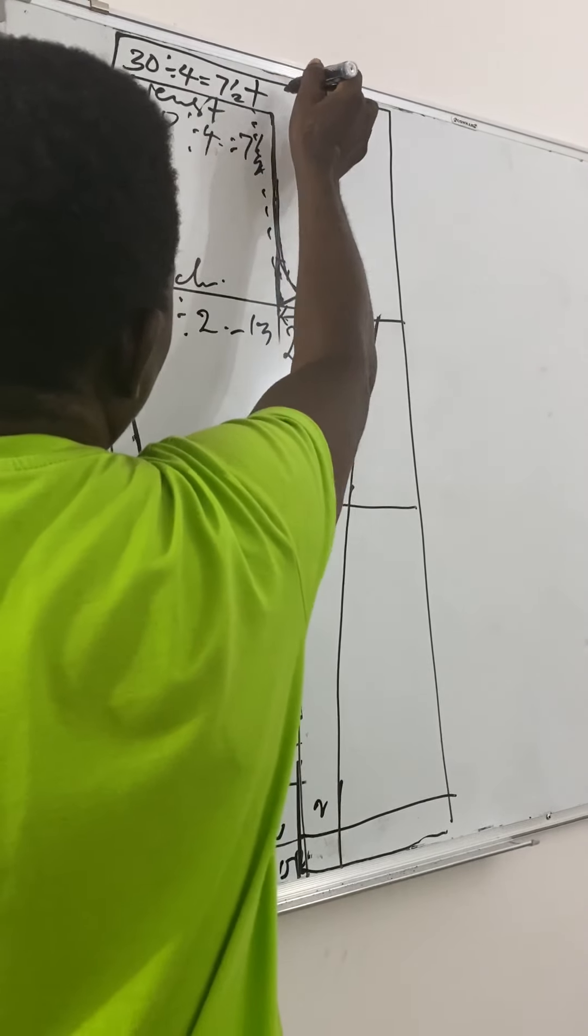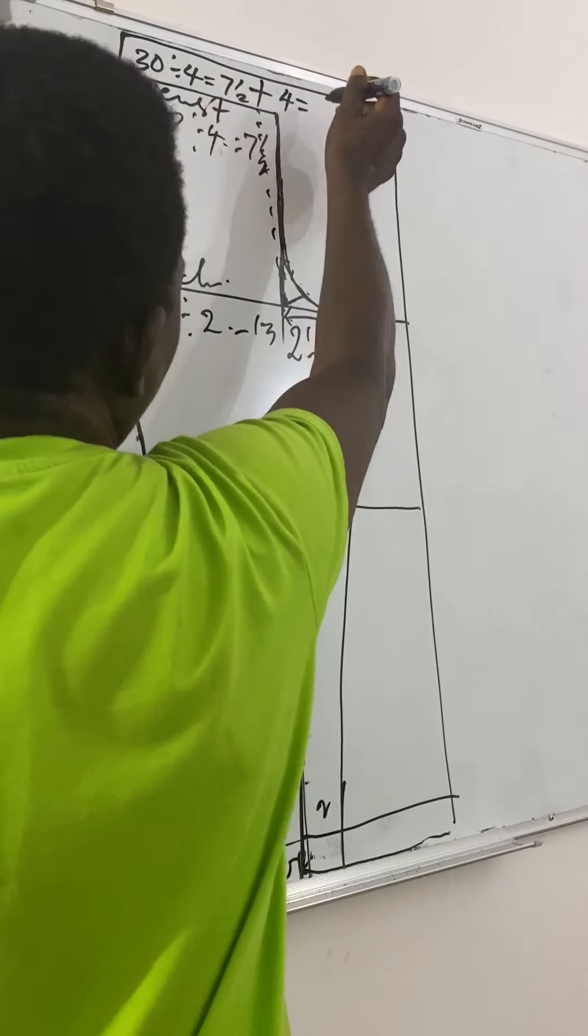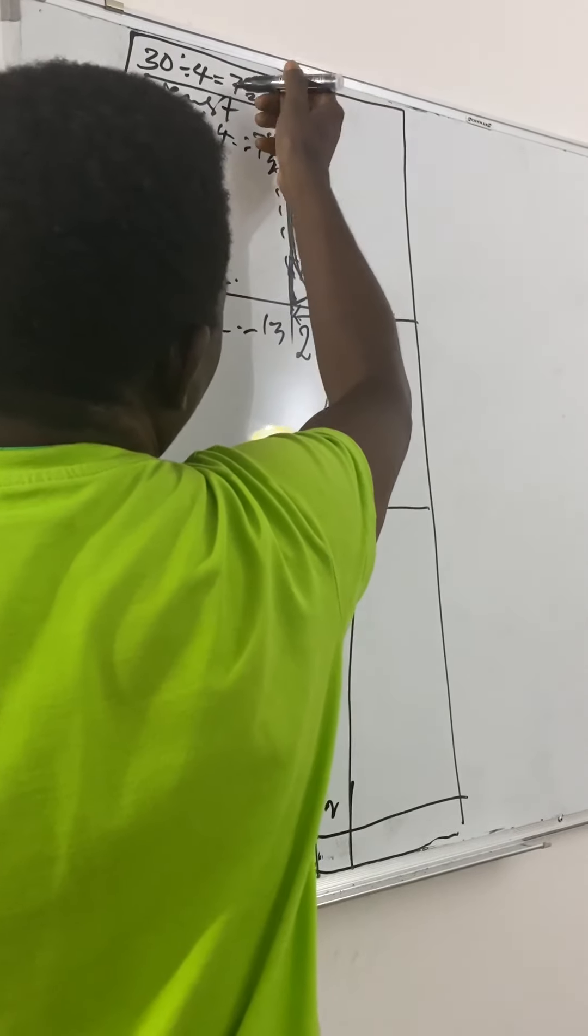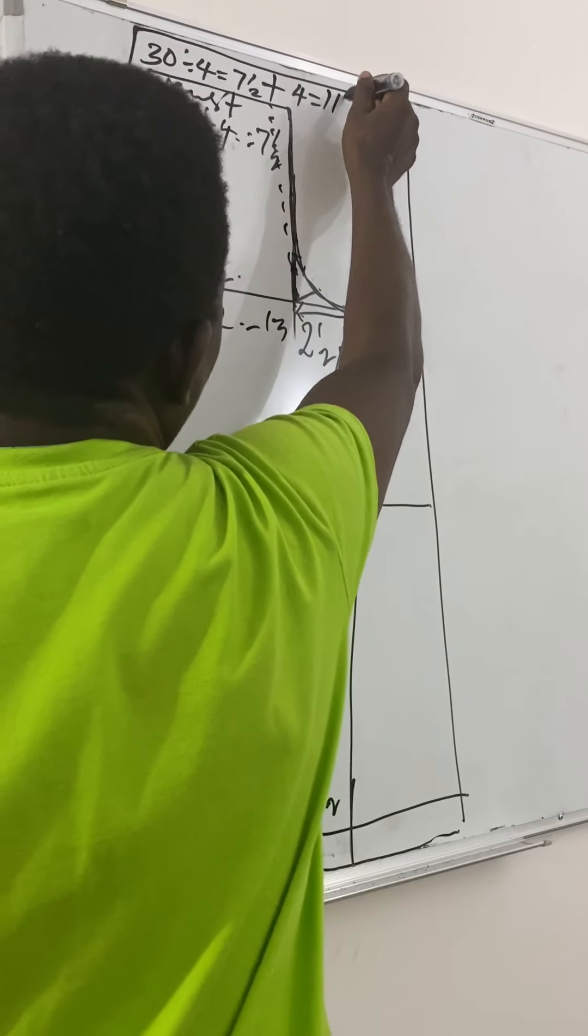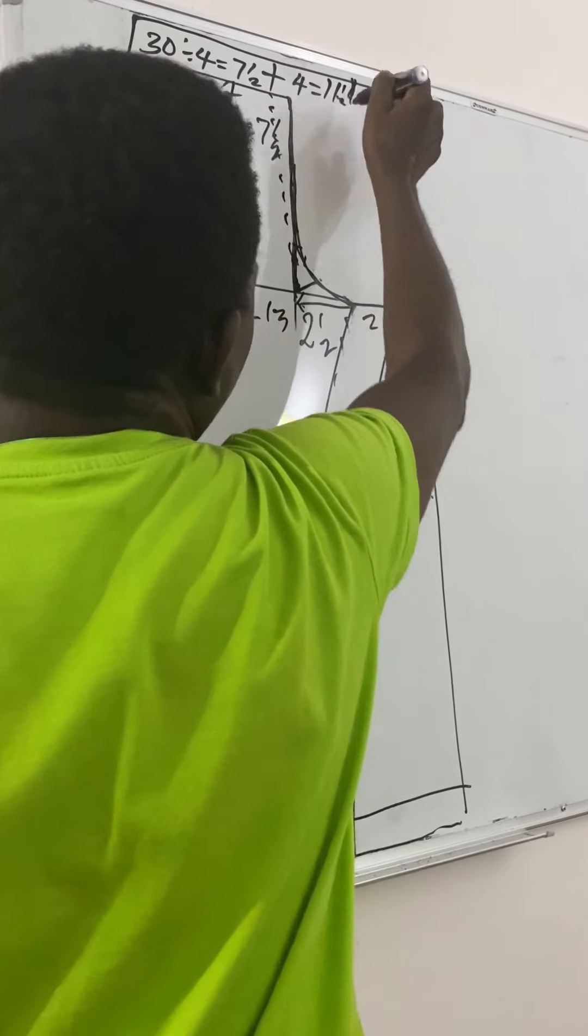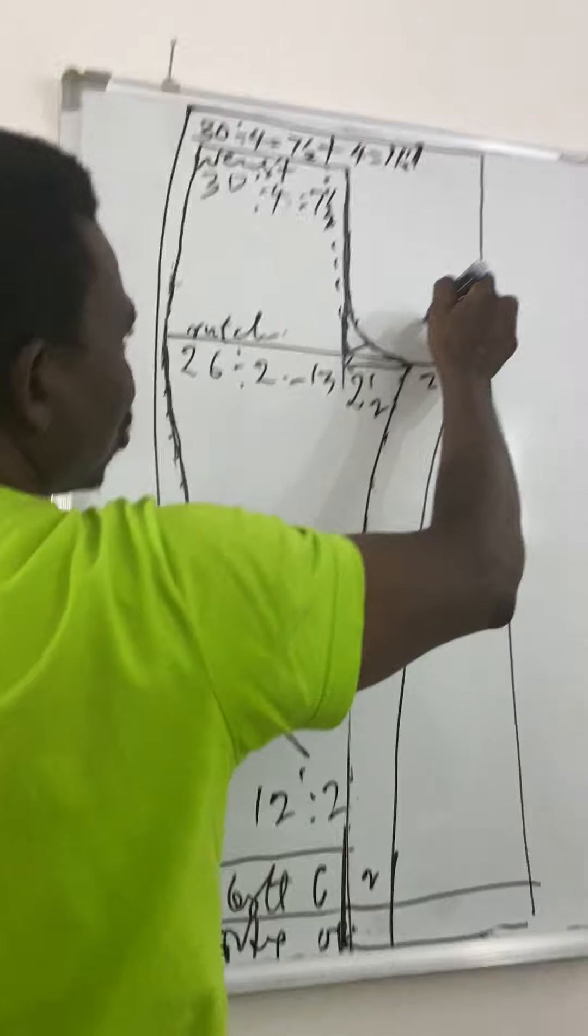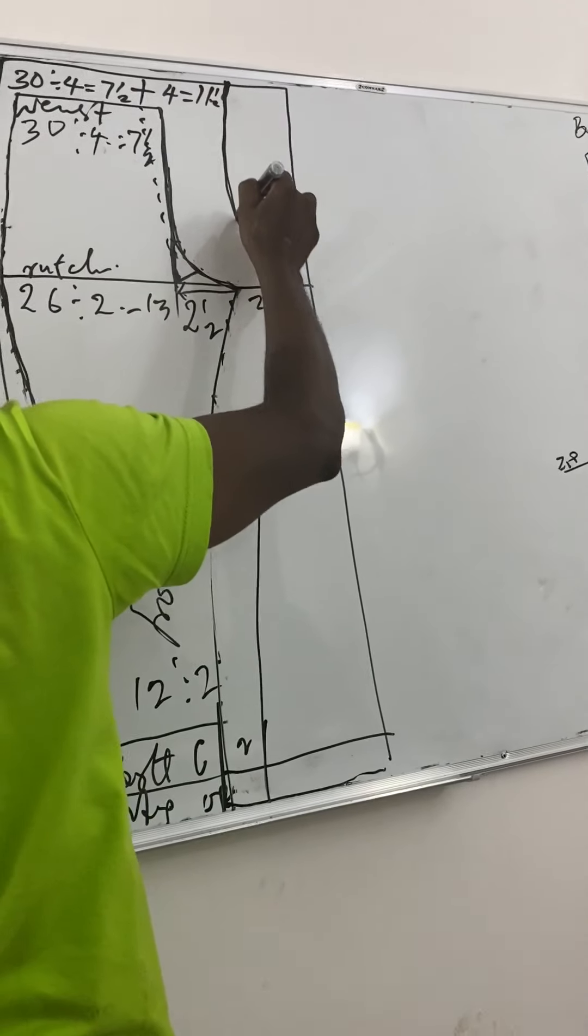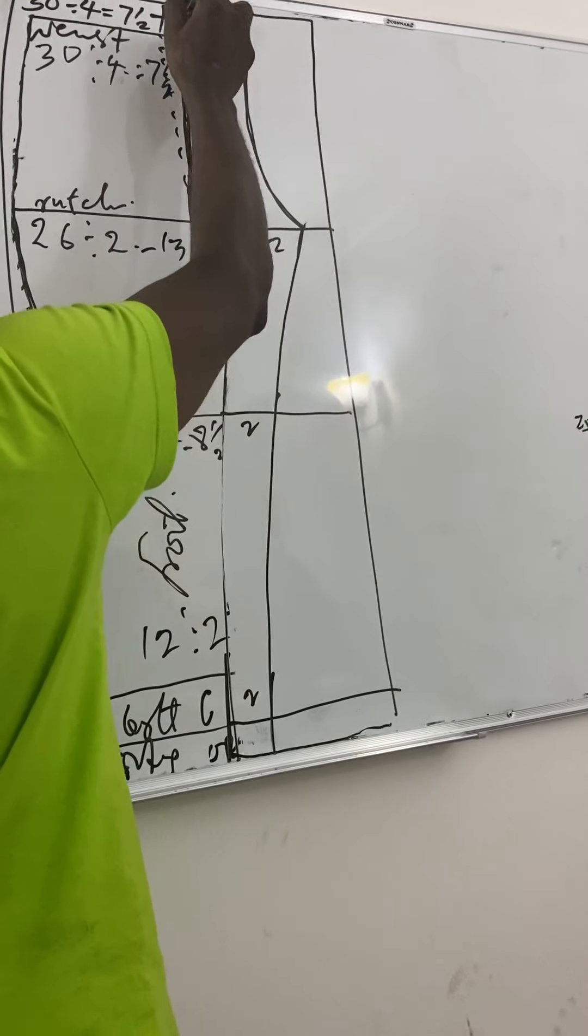You can do plus 4 inches. Making what? 11 and a half. So mark it. From here now, just connect to the 11 and a half. Are we together? Yes.